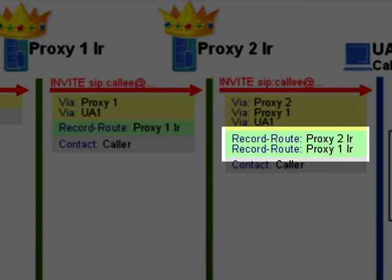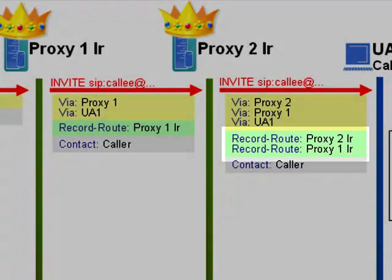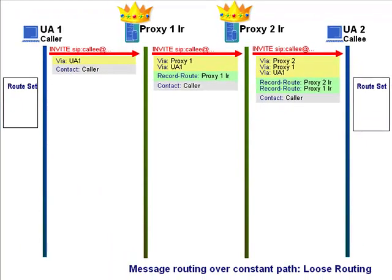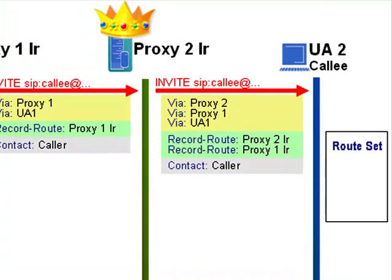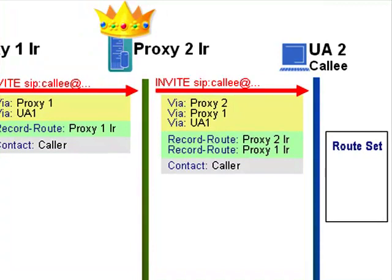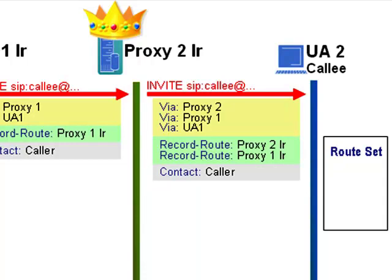Notice how we have a growing list of Record-Route headers, similar in a way to Via headers. The big difference is that the Via header must be added to every outgoing request for routing responses, whilst the Record-Route header is optional — a server only adds his address in a Record-Route header if he wants to be kept in the signalling path. When the request arrives at the endpoint user agent, he'd normally copy the caller's contact address into his route set. But this time, when he sees Record-Route headers, he copies those as well — all the Record-Route addresses and the contact address of the caller.